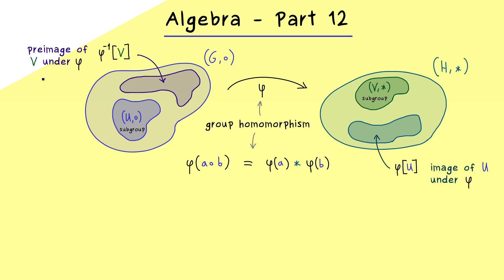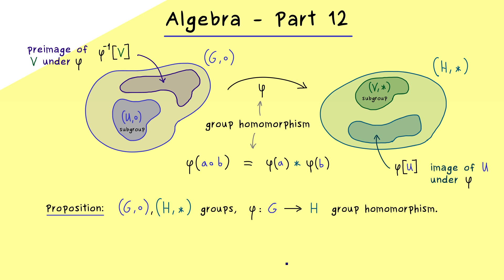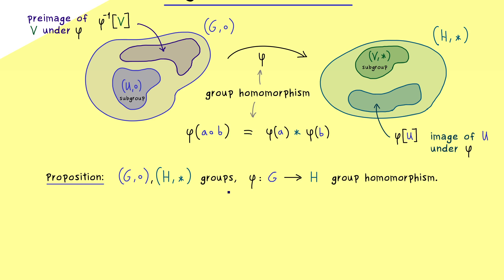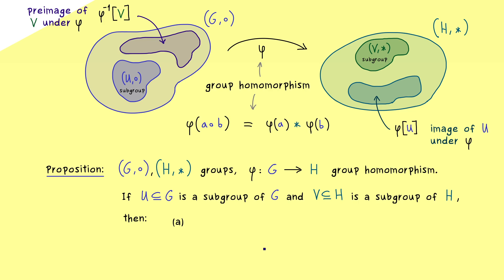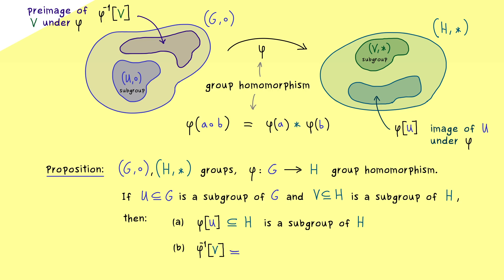We can prove that preimages of subgroups are subgroups again. The only requirement is that we have a group homomorphism. Let's put this into a proposition. We need two groups and a group homomorphism phi. Then we can look at a subgroup U on the left hand side and a subgroup V on the right hand side. The two results are: the image of U is a subgroup of H, and the preimage of V is a subgroup in G. A homomorphism always translates subgroups to subgroups.